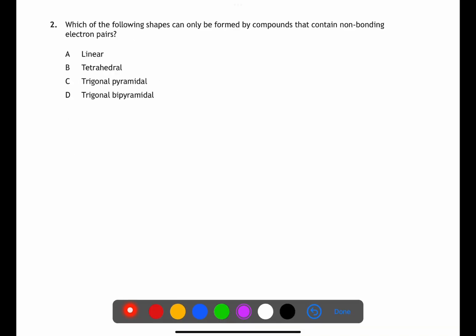Question two is looking at the shapes of molecules and using VSEPR rules. We're looking for shapes that are formed by compounds that contain non-bonding electron pairs. For a linear shape you could form this by either having two atoms joined together or three atoms joined together with non-bonding pairs. For a tetrahedral shape this is always with a central atom with four atoms attached and no non-bonding pairs. For trigonal pyramidal this is where you have a central atom and three atoms attached. There is always a non-bonding pair which will repel the bonding pairs away and therefore create the trigonal pyramidal shape.